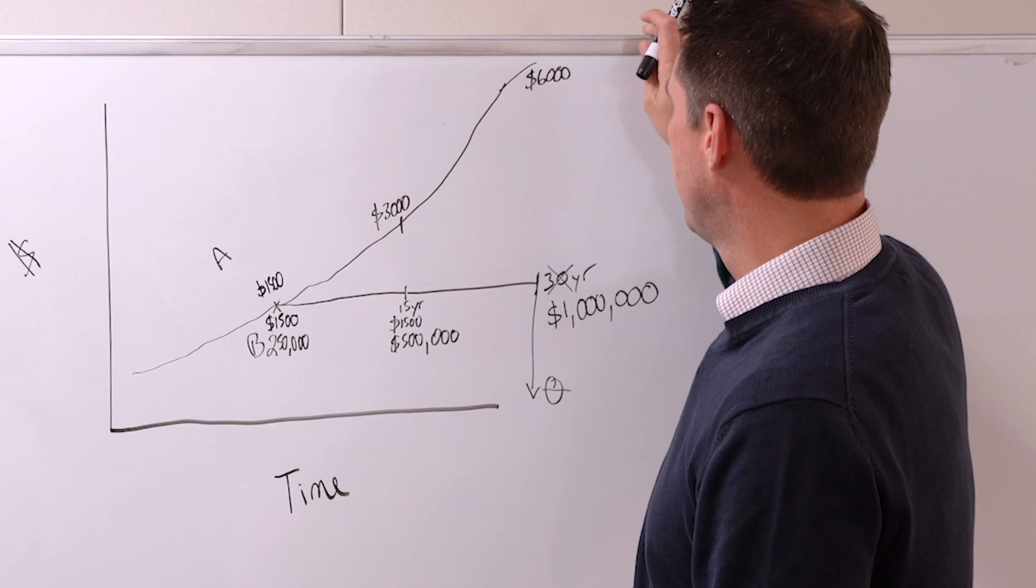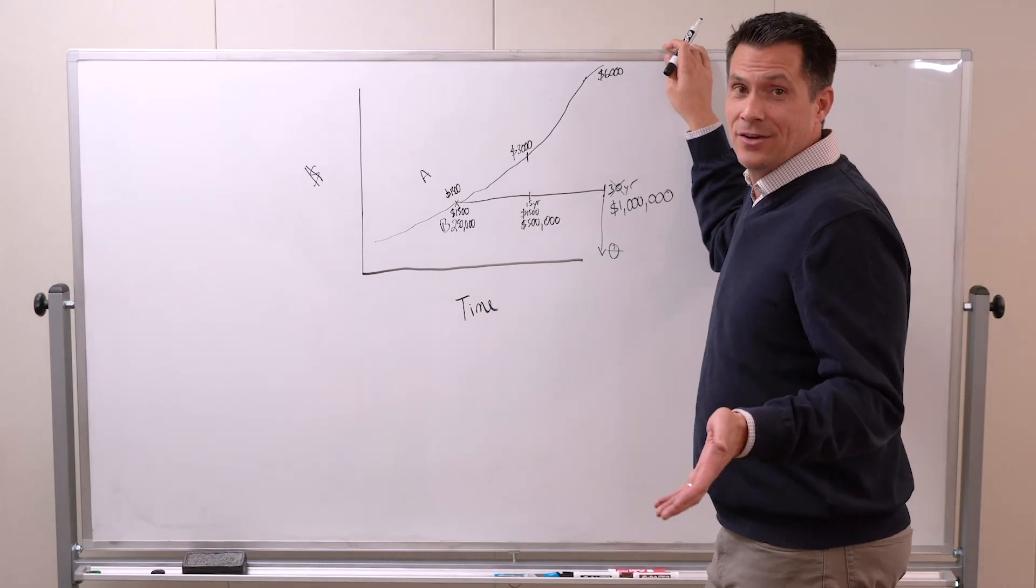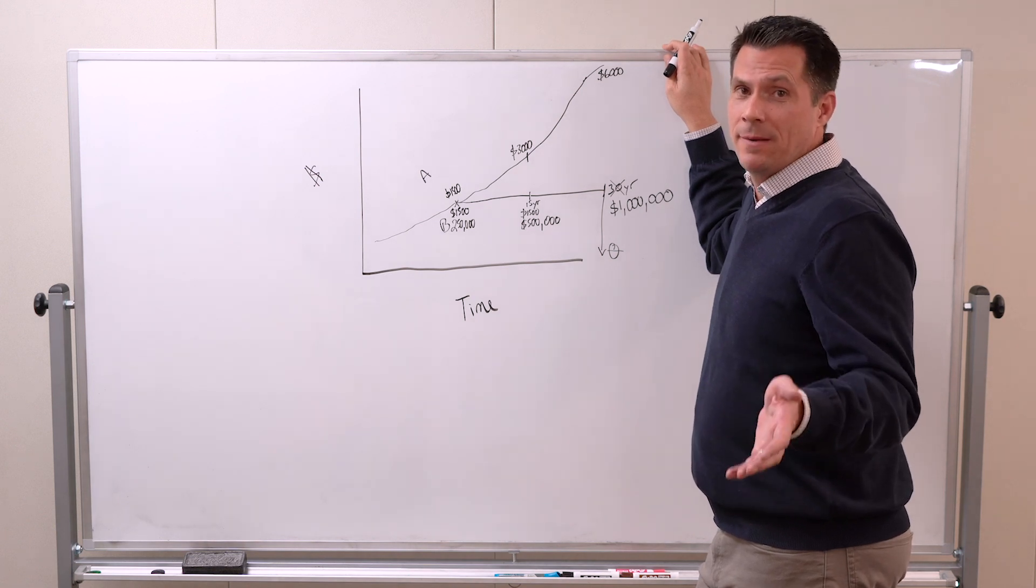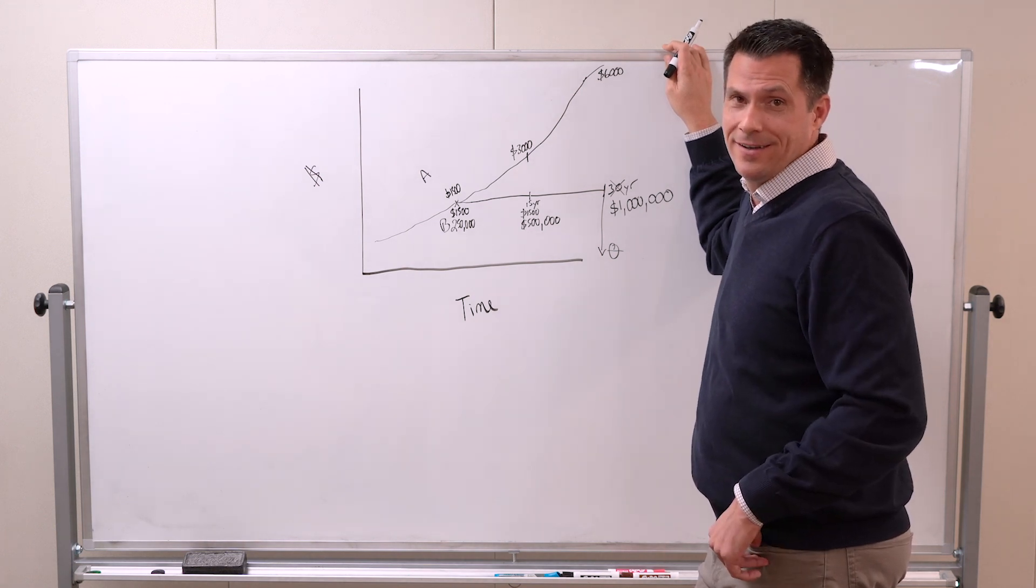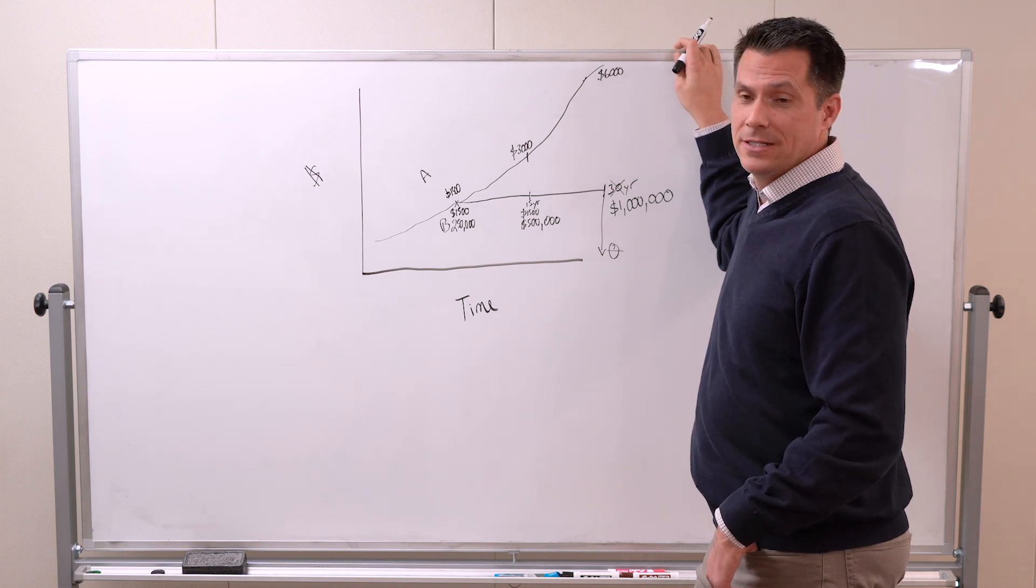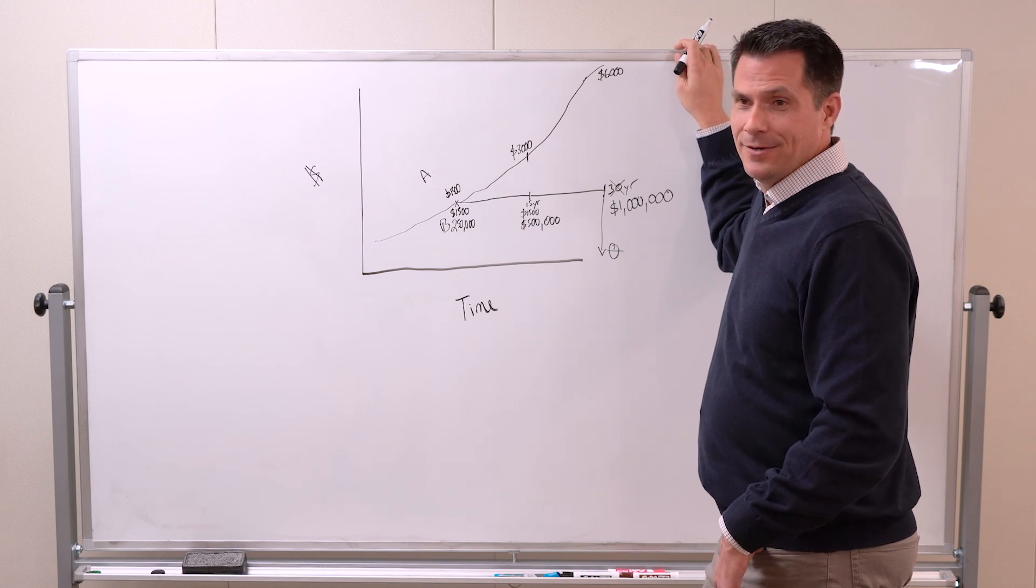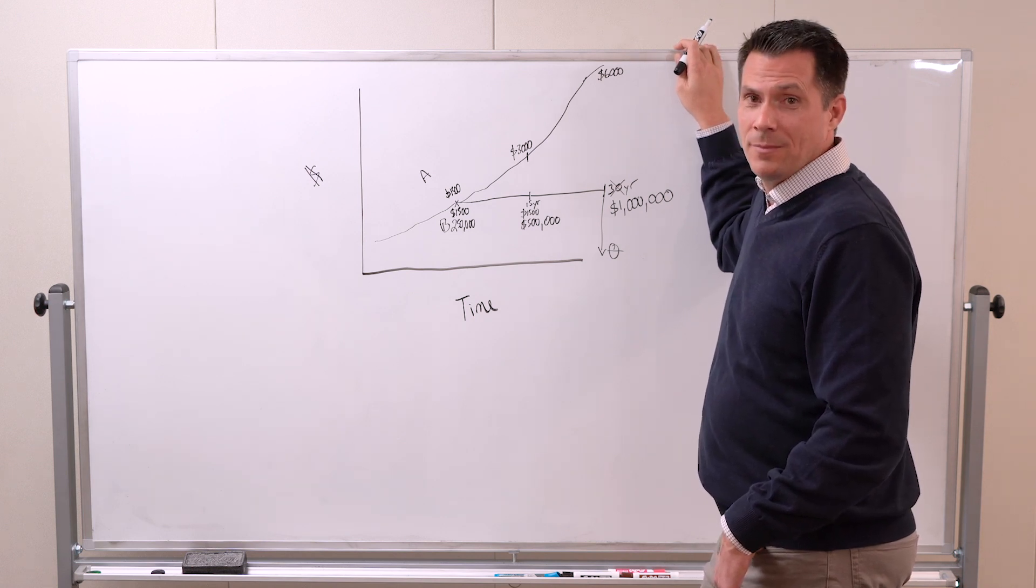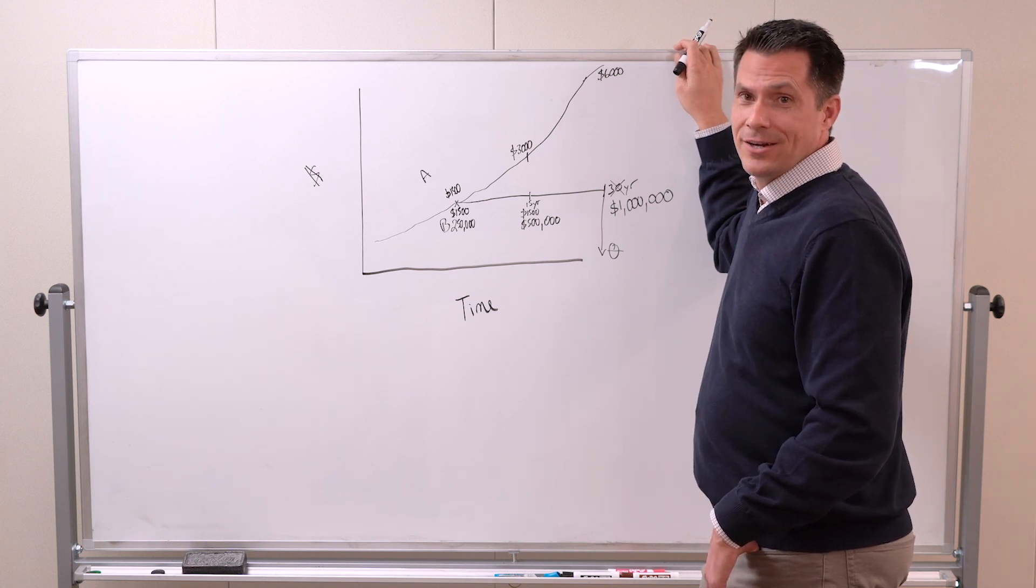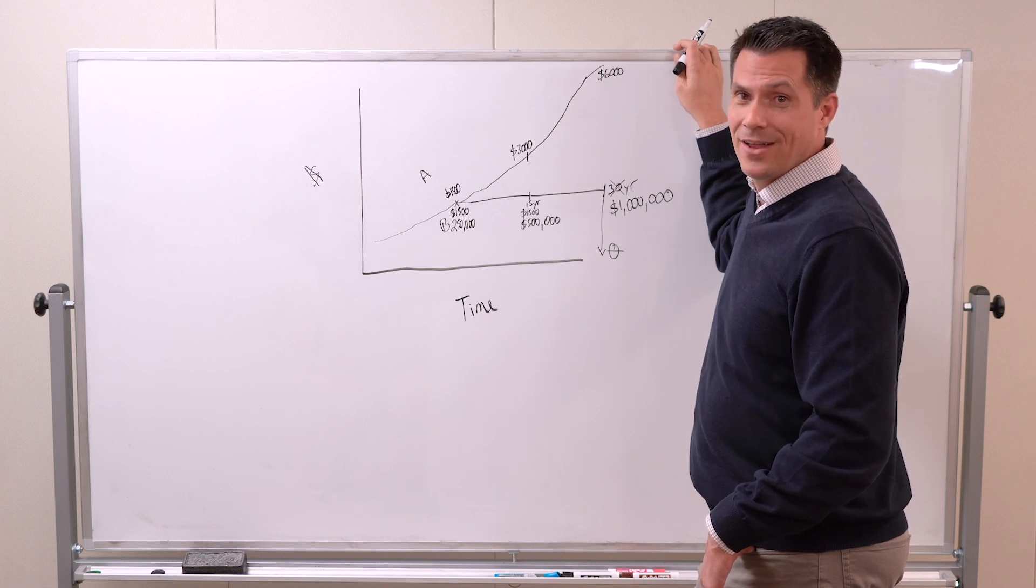Now if you think these numbers sound a little crazy, they can sound exaggerated until you talk to your grandma. Go ask your grandma what she bought her first house for. I think mine said it was like $6,000. My mother-in-law bought her house in California for $78,000 thirty years ago, and now it's worth $700-some-odd thousand dollars.